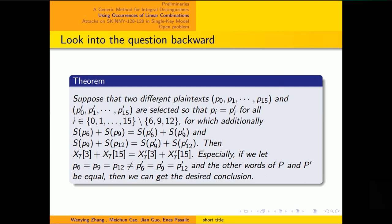Suppose that the two different plaintexts are selected so that Pi equals Pi' except for the 6th, the 9th and the 12th words. And additionally, we have the two constraints. Then the difference of the 3rd word and the 5th word is equal.